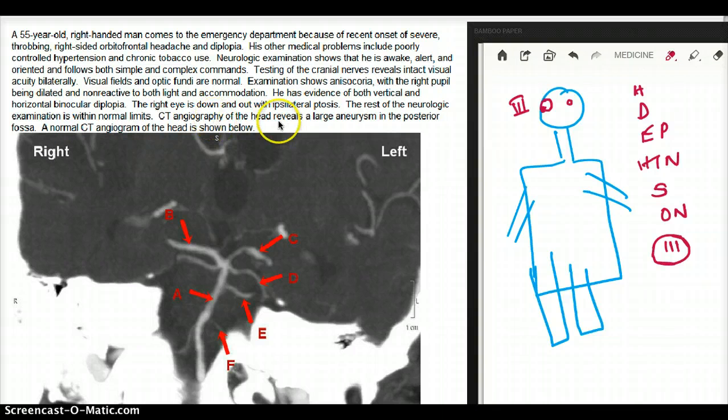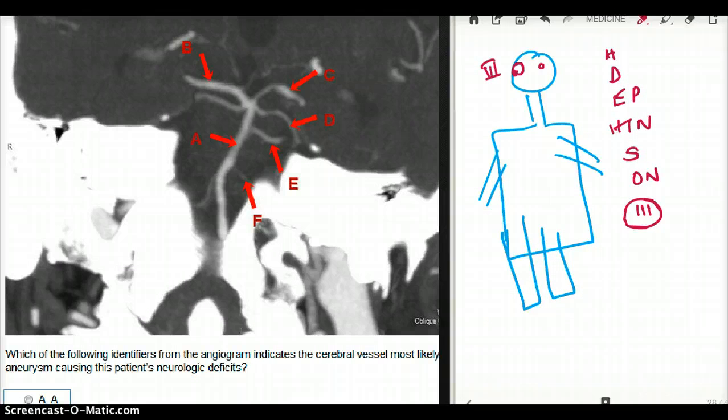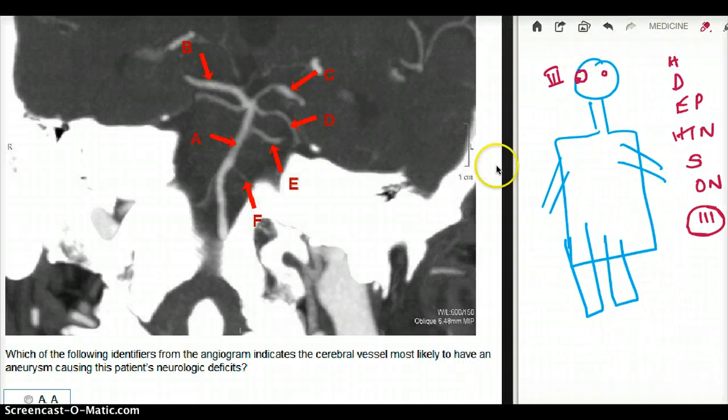CT angiography of the head reveals a large aneurysm in the posterior fossa. A normal CT angiogram of the head is shown below. Now the question says, which of the following identifiers from the angiogram indicates the cerebral vessel most likely to have an aneurysm causing this patient's neurologic deficits?